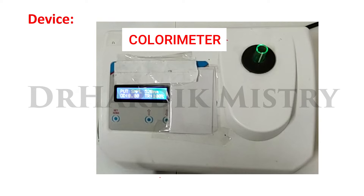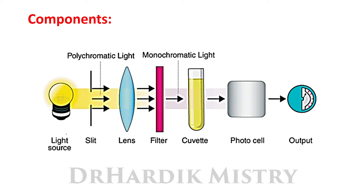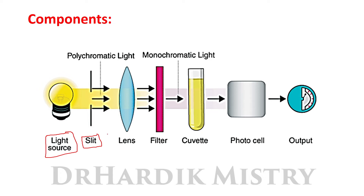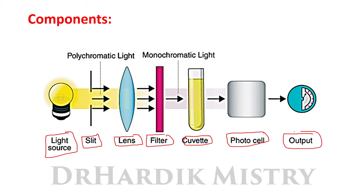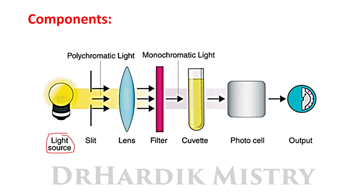Here is the device known as a colorimeter. The components of the colorimeter include: light source, adjustable slit, condensing lens, filter, cuvette, photocell, and output or measuring device. The light source — usually a tungsten lamp — provides light in the visible region of the spectrum. Light from the lamp passes through a narrow adjustable slit. The condensing lens provides a parallel beam of light.